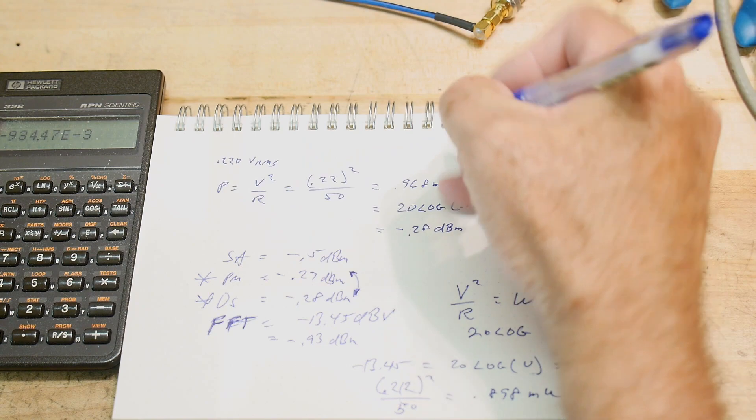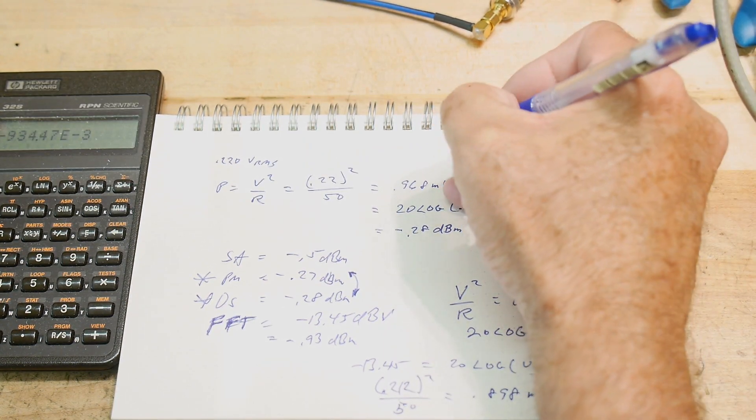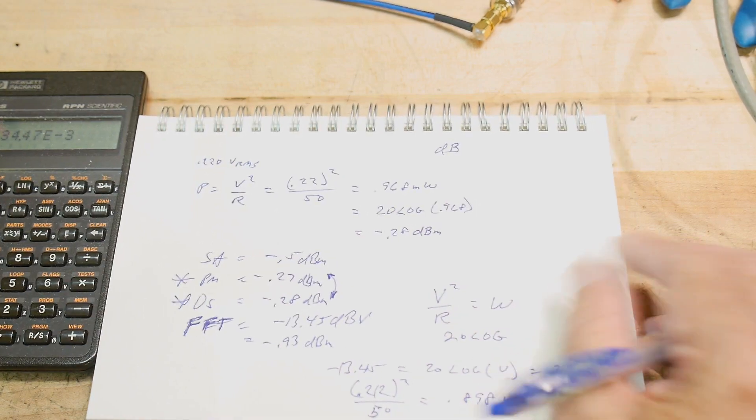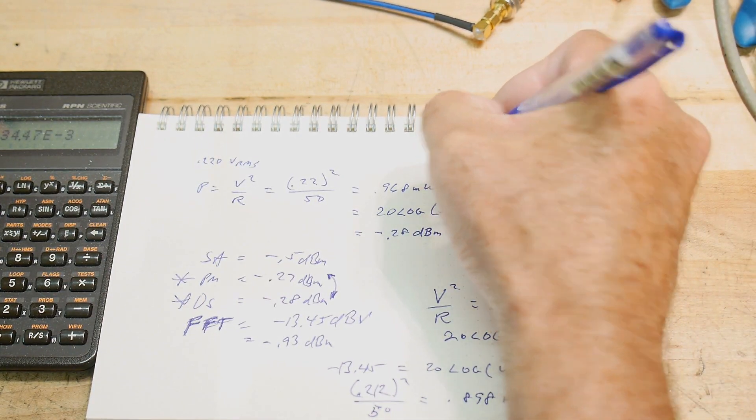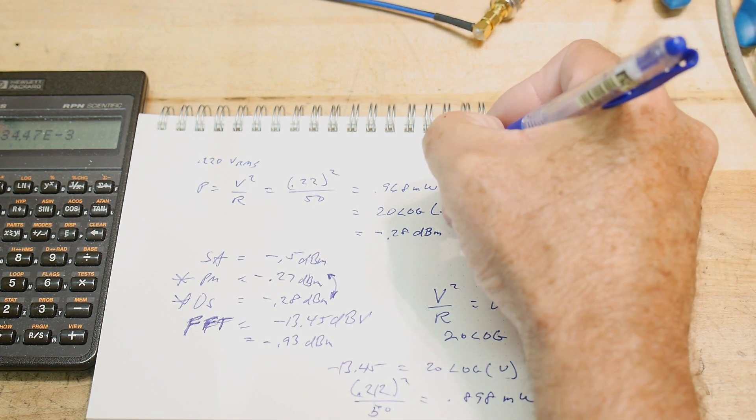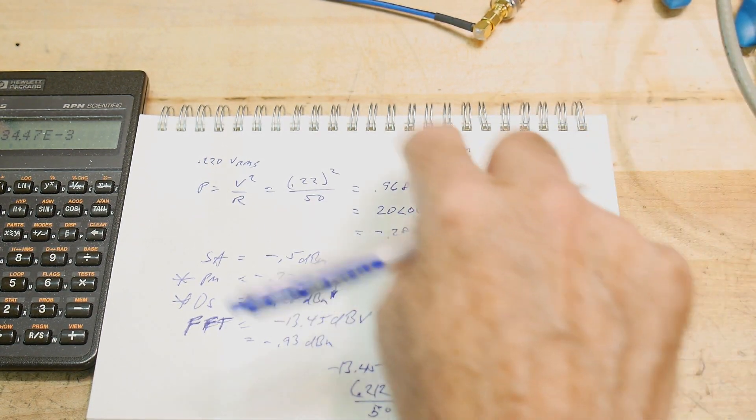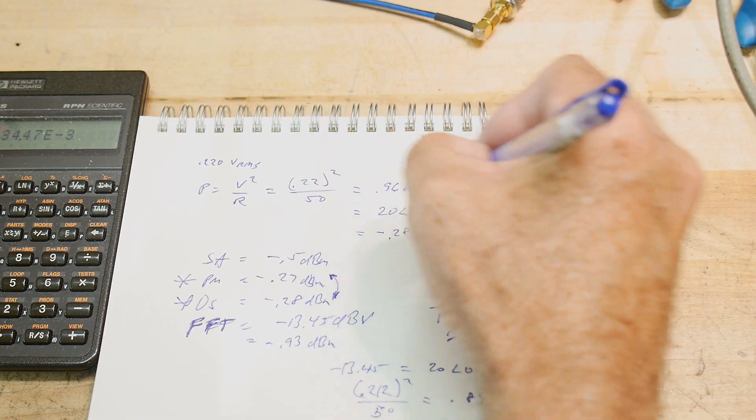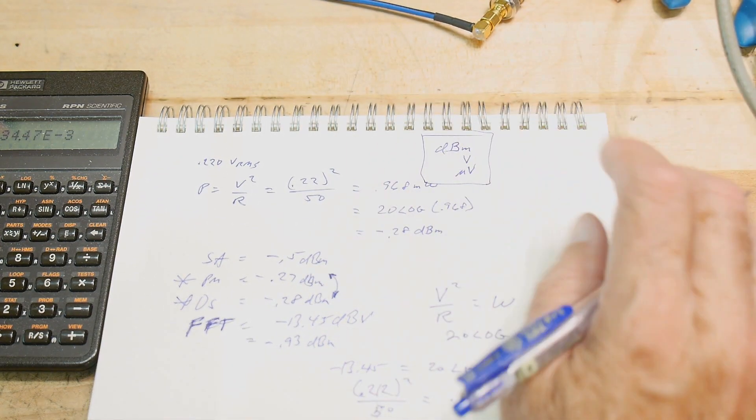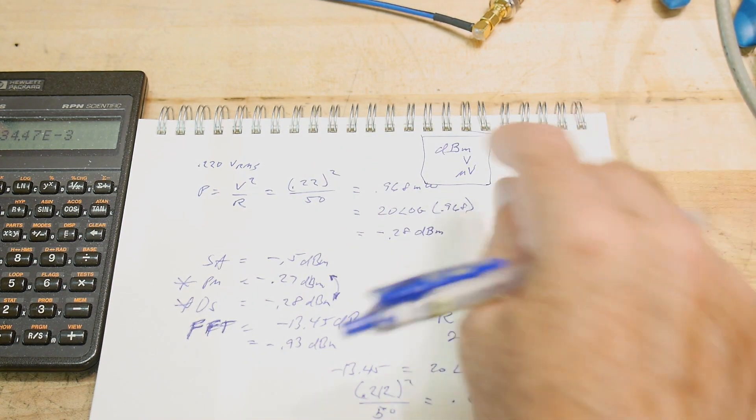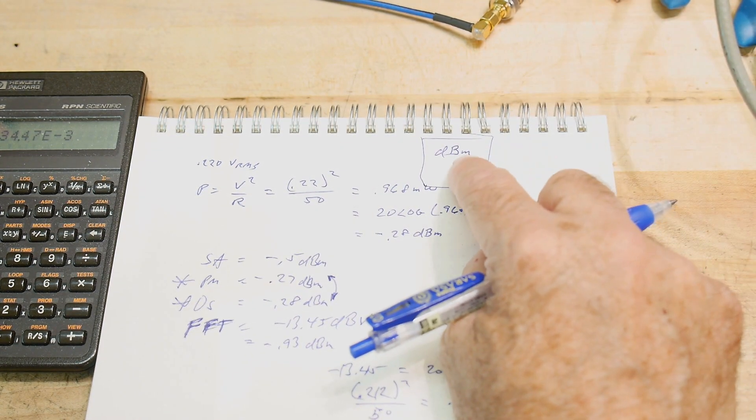I've heard this a few times now. There are dBs, which are relative units, but there are absolute values, which is dBm is an absolute number. dB volts is an absolute number. dB microvolts is an absolute number. There are certain dB things that are absolute and some that are relative. The ones that are absolute are relative to a particular number. So dBm is relative to one milliwatt.